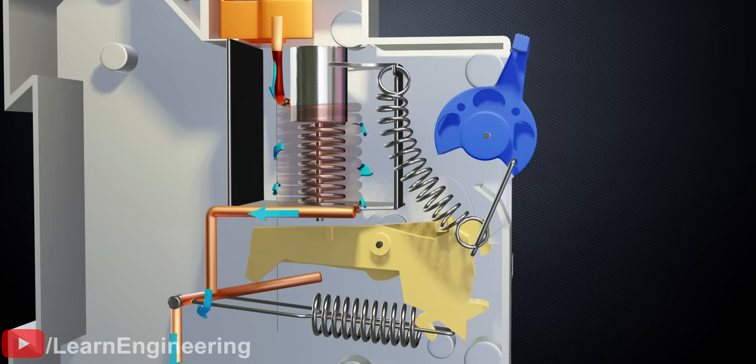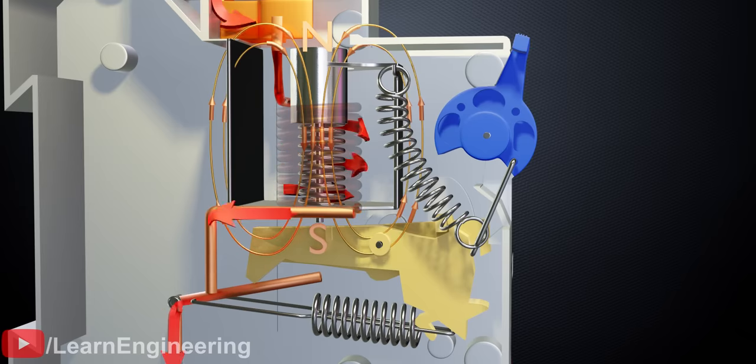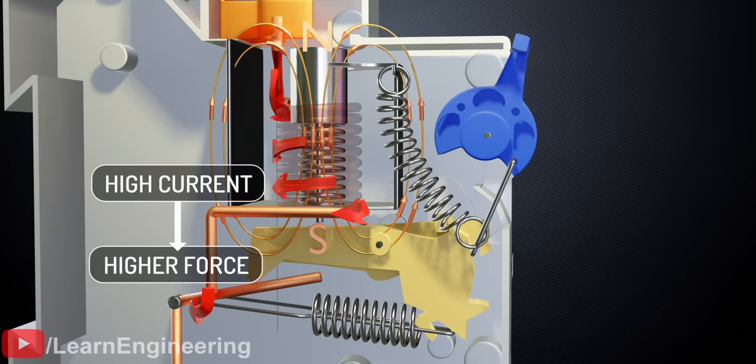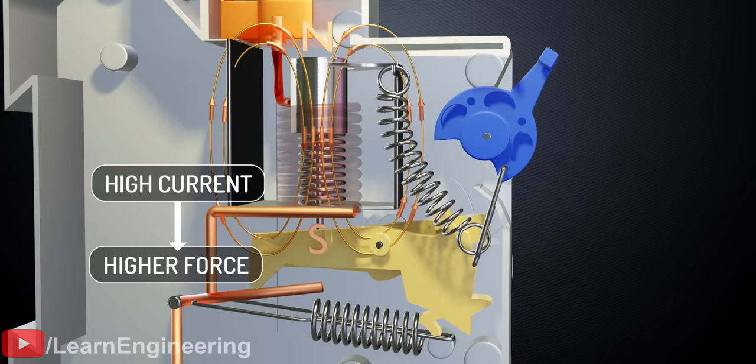You might be wondering, in normal current flow, why isn't this cylinder attracted down? Well, the force in normal current flow is not high enough to overcome spring tension. Whereas short circuit current can go up to 10 to 100 times the normal current, the force is quite high, so the circuit trips.